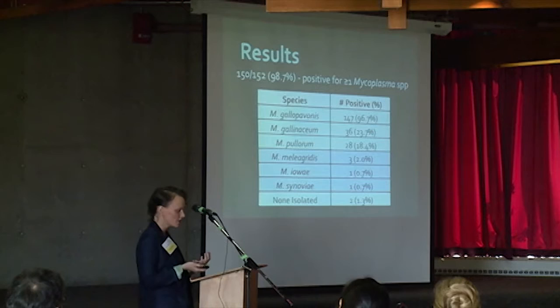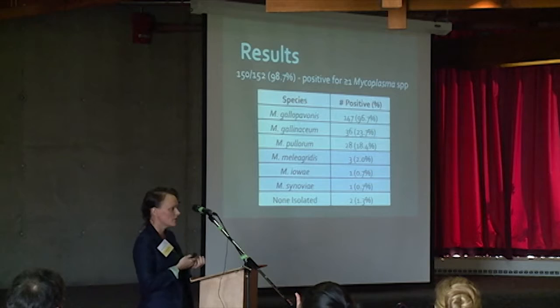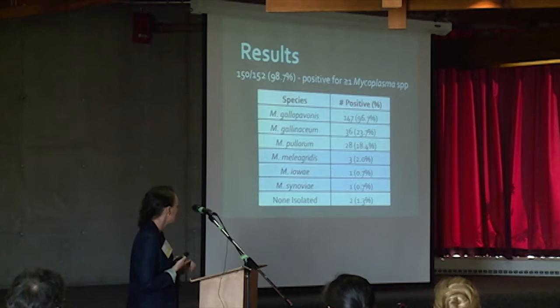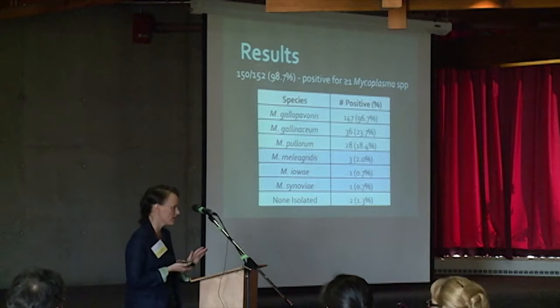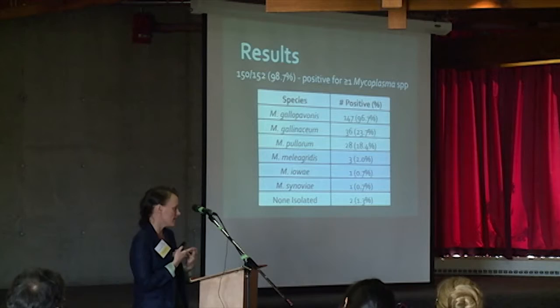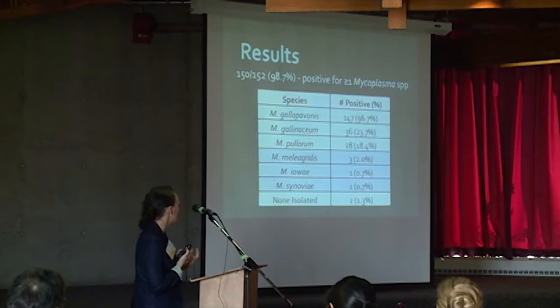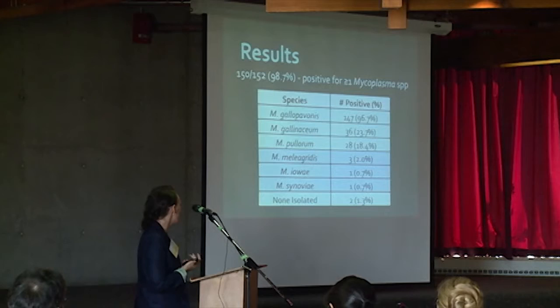For the study, I acquired 152 hunter-harvested wild turkeys from the spring 2015 wild turkey hunt. Of these, only two birds didn't have any mycoplasma at all — 150 of them, so 98 percent, had at least one species if not more. Many had multiple co-infections, and six different species of mycoplasma were isolated. Gallopavonus was the most common, found in almost every bird, followed by Gallinaceum and Pullorum. The three known to cause trouble — Meleagridis, IOA, and Synoviae — we had rare isolations of.